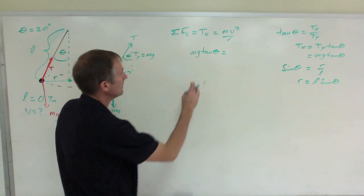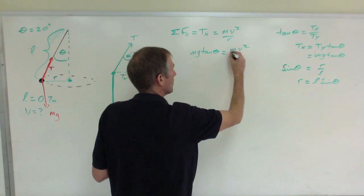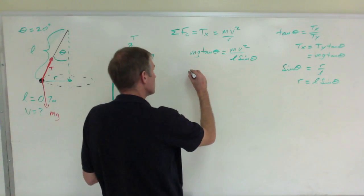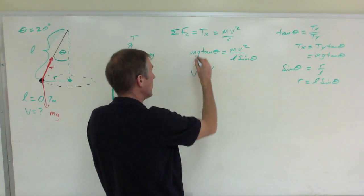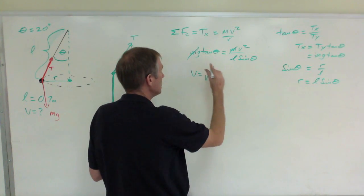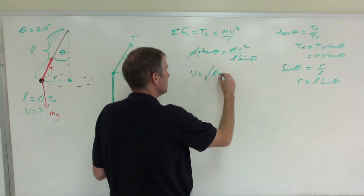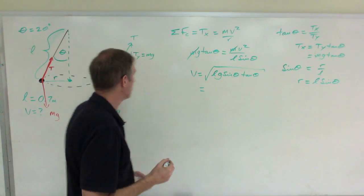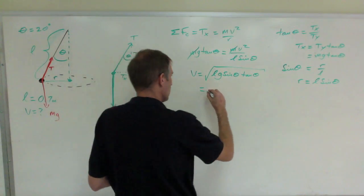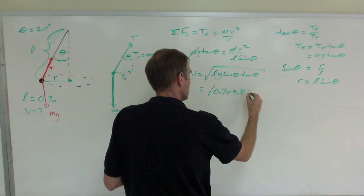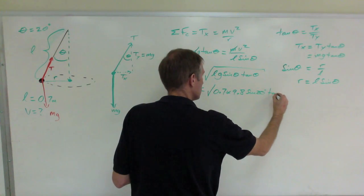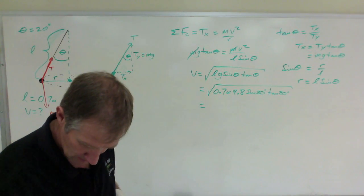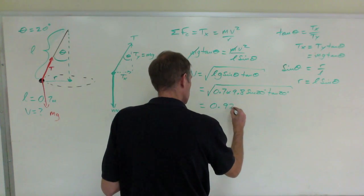So putting it together: mg·tan θ equals mv²/r, and r is l·sin θ. Solving for v — and by the way, the m's cancel — v equals the square root of l times g times sin θ times tan θ. Plugging in numbers: l is 0.7 meters, times 9.8, times sine of 20, times tangent of 20. That comes out to be 0.92 meters per second.